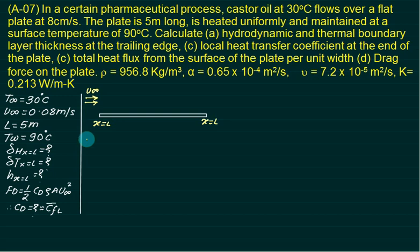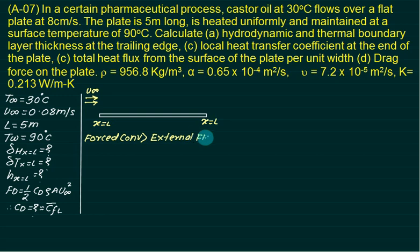Let us classify the problem so we can use the correct tables. This is a forced convection problem because a velocity is given and oil is flowing over the plate, so it is an external flow problem. The geometry is a flat plate. To select the appropriate table, we need to identify whether the flow is laminar or turbulent by calculating the Reynolds number.